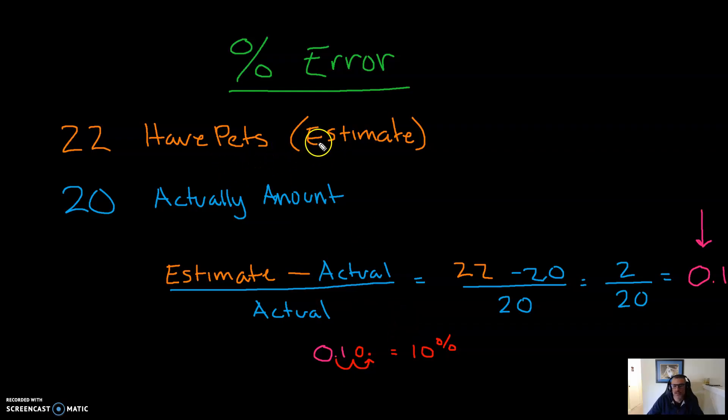So 0.1 is equal to 10%. So I was off, the percent error in this case was 10%. And it's a quick little, you know, on this last step here. Just recall that 0.1 is 10%. 0.2 equals 20%. 0.3 equals 30%. And so on. Anytime you have a number in the 10th spot here, it just means 20%, 30%. So let's take a look at a second example with a little twist.